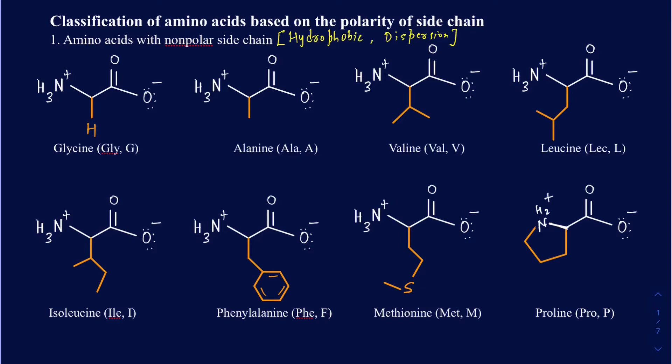You may wonder why we really need these three-letter codes and one-letter codes. If you have hundreds and thousands of amino acids in one protein and you want to write down the sequence of those amino acids to specify that particular protein, you don't really have time to write down the full names. That's when you write down the three-letter codes, but most likely the one-letter code is used in those cases.